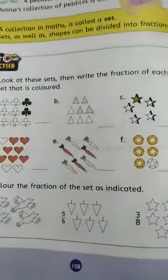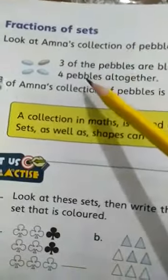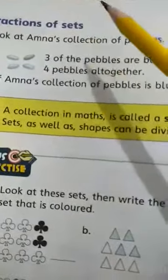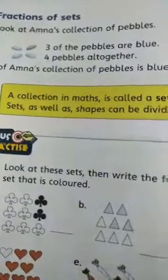Next है हमारे पास — page number 108, सबसे उपर जाएं. लिखा हुआ है: Fraction of Sets. अब हम sets के बारे में पढ़ेंगे. वैसे तक हम shapes के fraction के बारे में पढ़ते रहे — कोई value होती है, उसको हम fraction की form में कैसे लिखते हैं यह मैंने आपको बताया. अब sets के बारे में बताएंगे. Pebbles किसे कहते हैं आपको बताता हूं — छोटे-छोटे पत्थर.